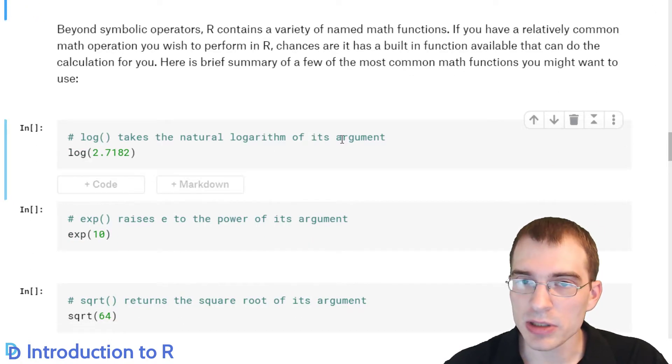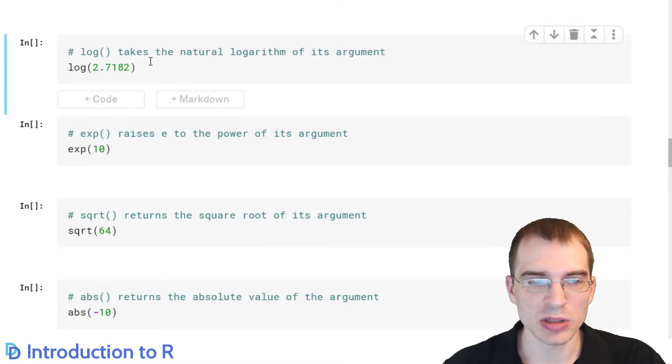Beyond the symbolic operators that we've covered, there are a lot of built-in functions as well. A function is simply a named operation that takes some input and then produces some output from it. Whenever you see a name, like log, and then a parentheses, log is the name of the function, and the parentheses is where you pass in input. Functions can take different numbers of input values, but these simple mathematic ones, you basically just need to pass in one value that you're trying to do the operation on.